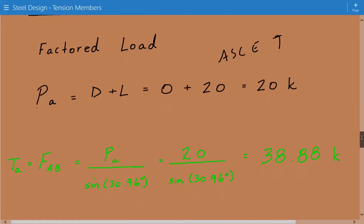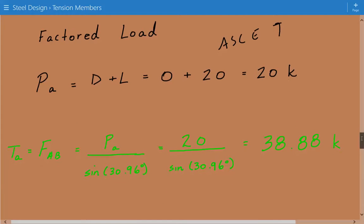And now, now we need to find the tensile loading in member AB again. So we already have the relationship that the tensile load in AB is equal to our factored load divided by sine of 30.96 degrees that we already established when we were doing the LRFD approach, and the statics don't change.